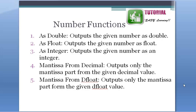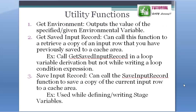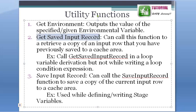I'm sorry, I'm not getting into more detail on the number functions because I'm not sure about them and I don't want to give you wrong information. Next are utility functions. The first one is get environment — it basically outputs the value of the given environmental variable. Next is get saved input record and save input record. Let me explain save input record first — it saves a copy of the input record, which makes more sense before discussing get saved input record.